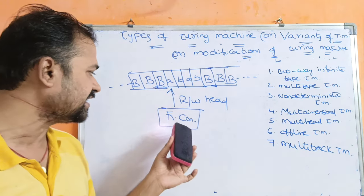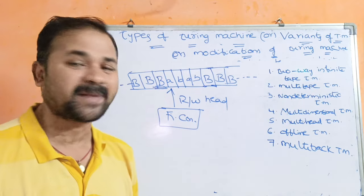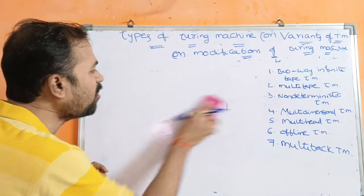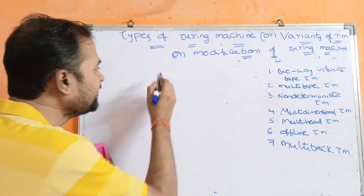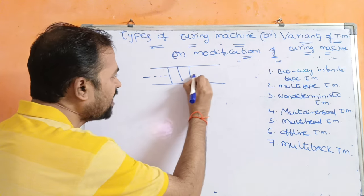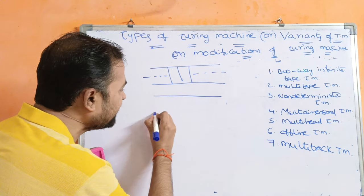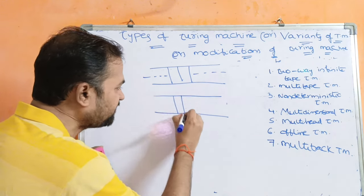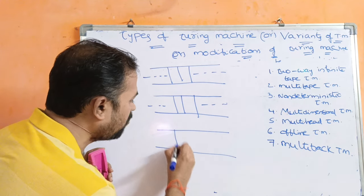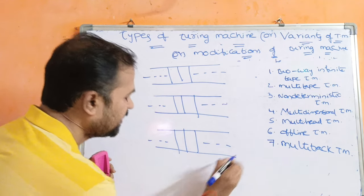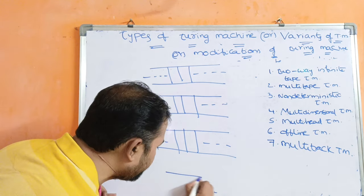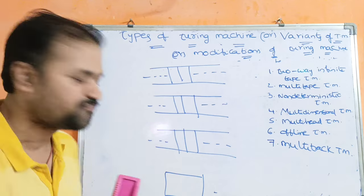Now let us see the multi-tape Turing machine. The name specifies the meaning — multi-tape means we can have multiple tapes instead of a single tape. The tape is infinite at both the right-hand side and the left-hand side. We can have multiple tapes and one finite control.